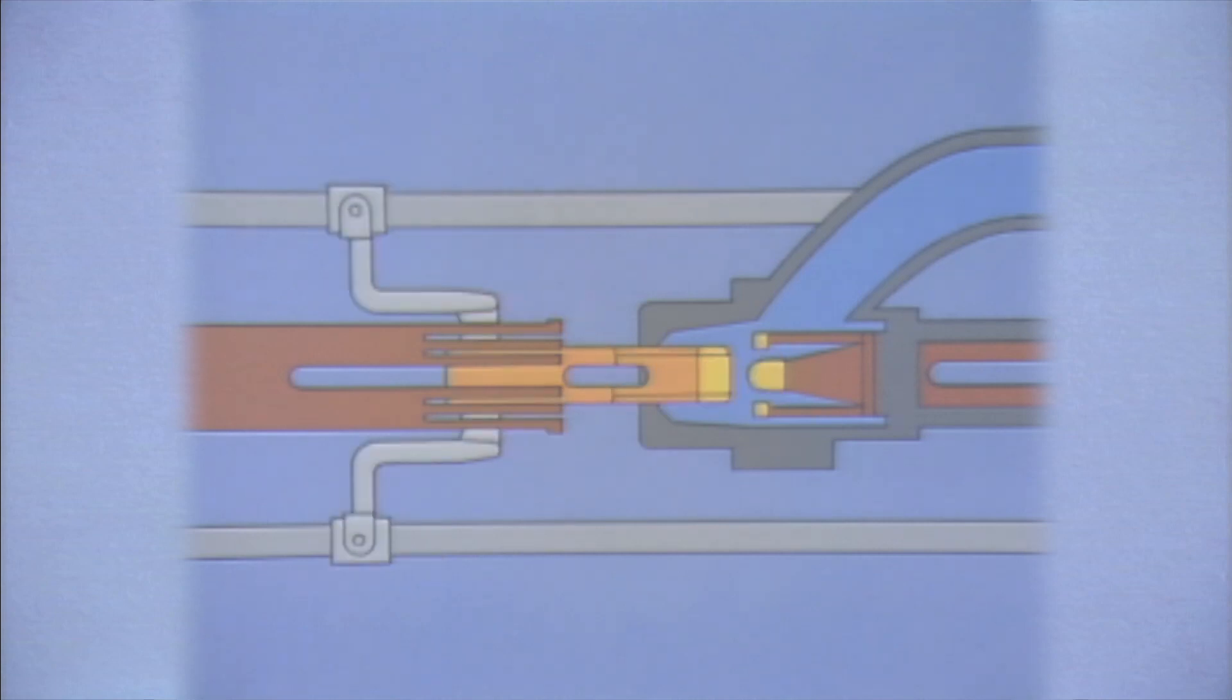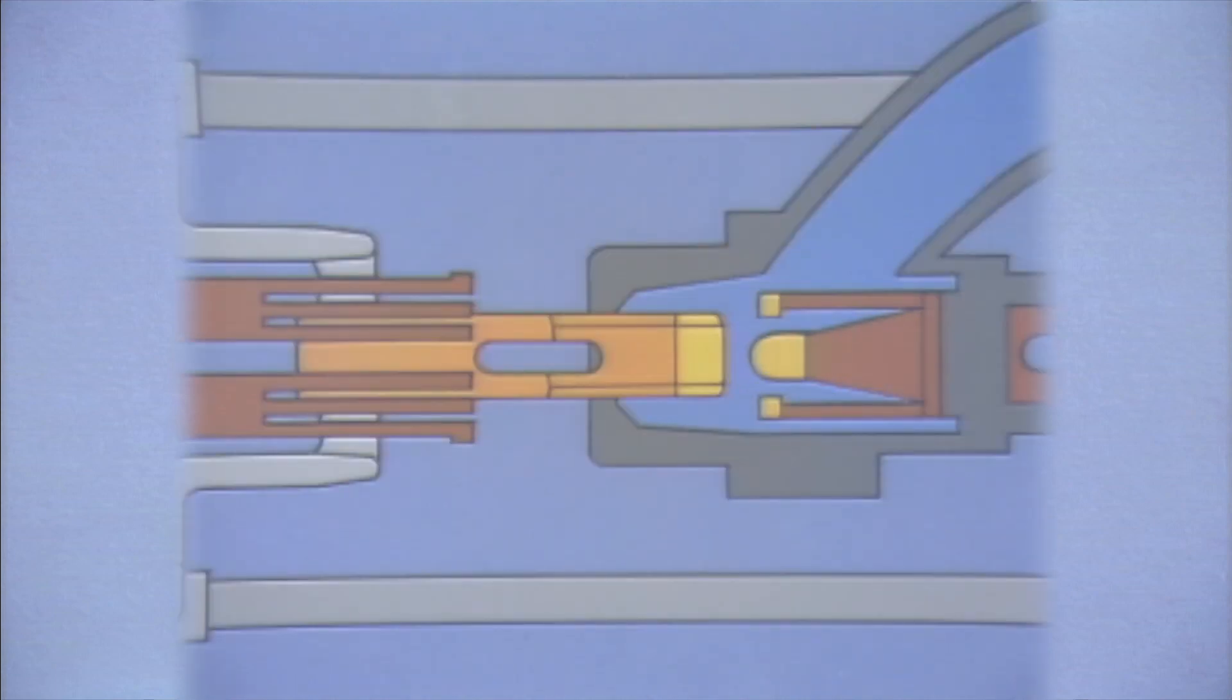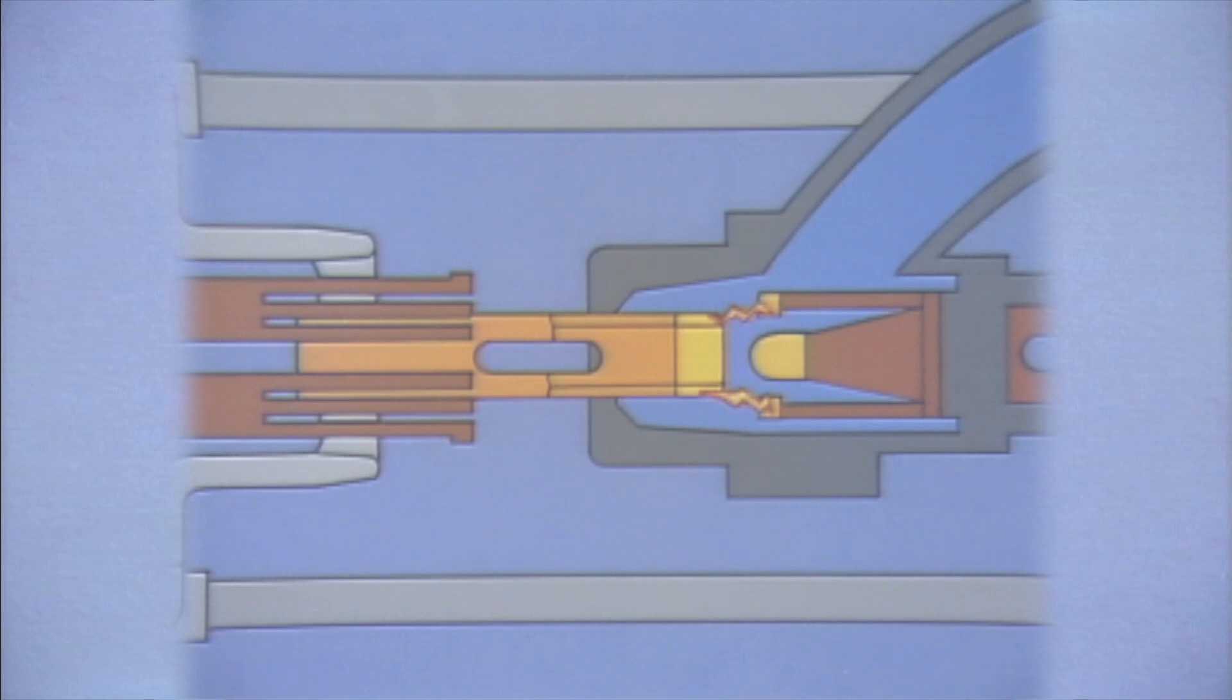When the breaker trips, the moving contact slides along one set of the stationary contact fingers and separates from the other set, and an arc forms.